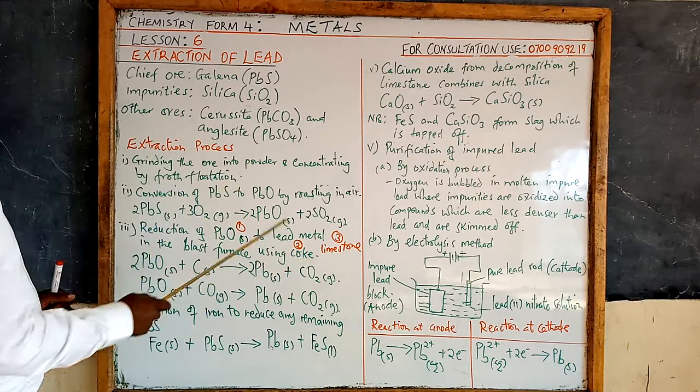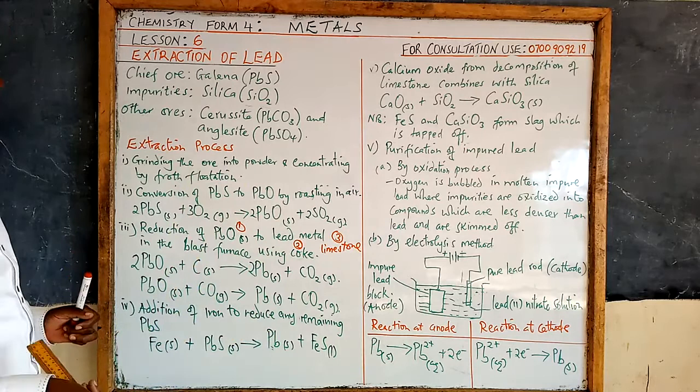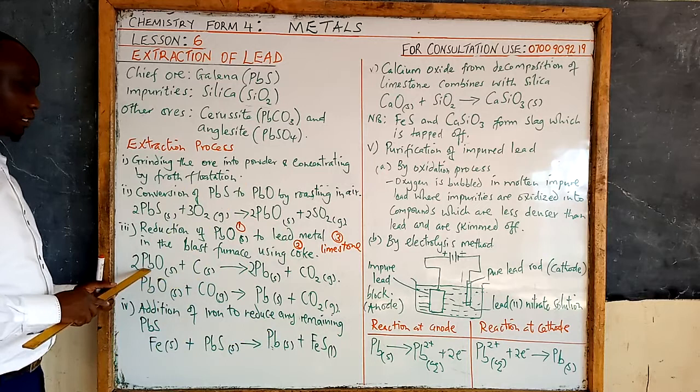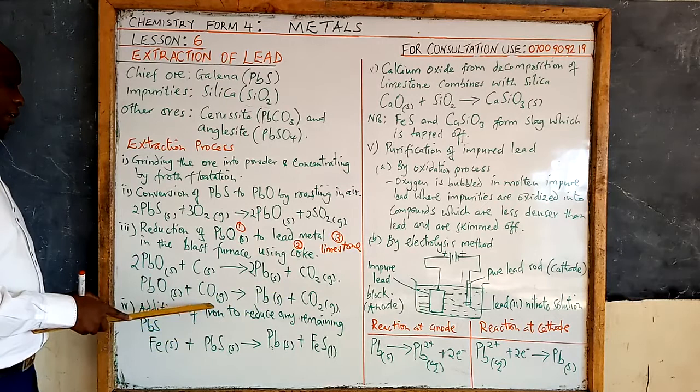In the blast furnace, coke reacts with oxygen to form carbon dioxide. Carbon dioxide is then reduced to carbon monoxide. Some of the coke, which is carbon, will reduce lead oxide to lead metal, while carbon is oxidised to carbon dioxide.